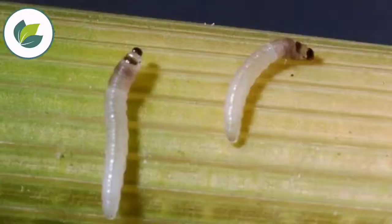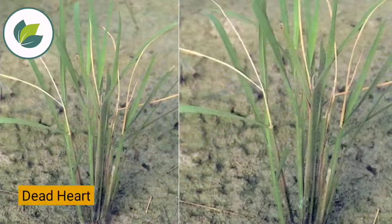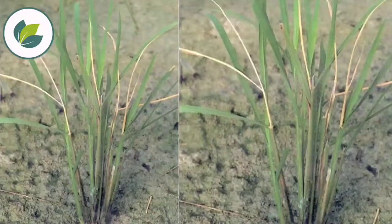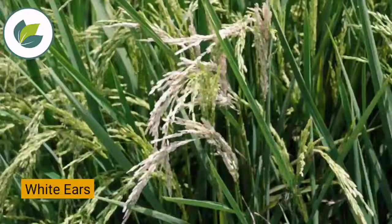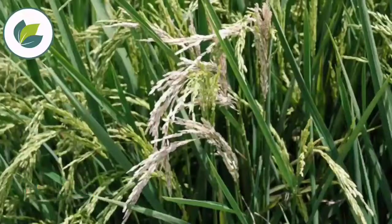Due to the attack of stem borer larvae, dead heart occurs if the infestation takes place in the early stage of growth, and white ears occur if infestation of the pest takes place at the later stages of growth.